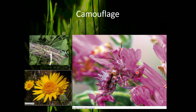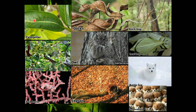Camouflage is organisms blending into their environment. Here are some examples: a praying mantis blending into its orchid, a lizard on a log, a bright yellow spider on a flower, a caterpillar lined up along a leaf, a chameleon, a seahorse on coral, a jaguar, an owl, a gecko, a stick bug that looks very much like sticks, a leaf insect, and even an arctic fox blending in with its snowy environment.